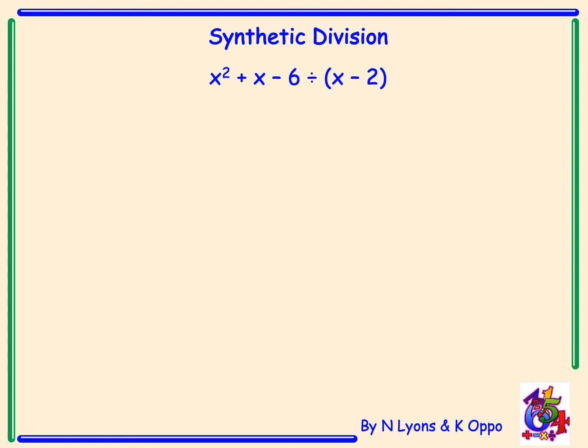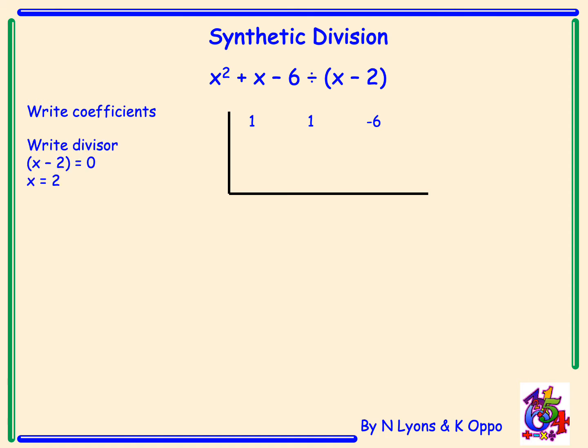Here we have x² + x - 6, and we divide this by x - 2. We first write the coefficients of our polynomial in a table: the coefficient of x² is 1, the coefficient of x is 1, and the coefficient of x⁰ is -6. Remember to place your signs with your coefficients. Our divisor — since x - 2 = 0 gives x = 2 — is placed outside our table.